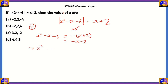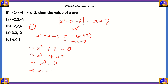In Case 1, taking −x−2 to the left: x²−x+x−6+2 = 0, which simplifies to x²−4 = 0, so x² = 4. Taking the square root gives x = ±2. Both +2 and −2 squared give 4, so x = +2 and x = −2 are both valid solutions here.